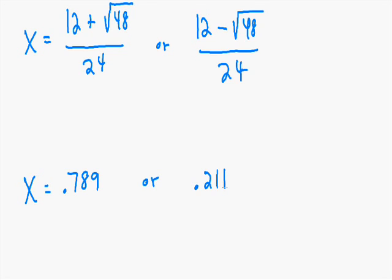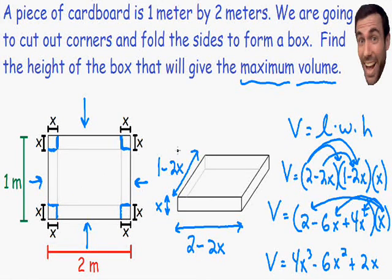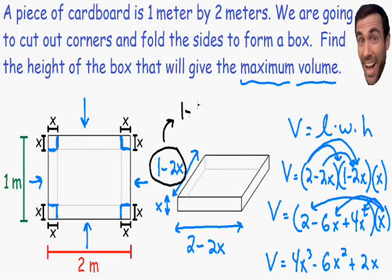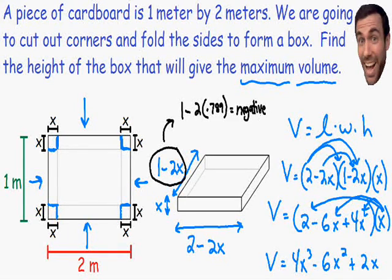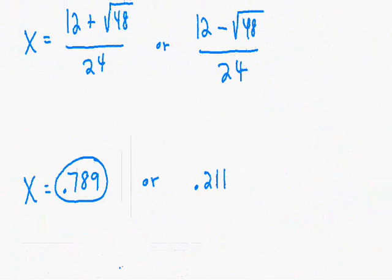Looking at the critical value of 0.789: substituting into the width expression 1 − 2x gives 1 − 2(0.789), which is a negative value. Since a distance can never be negative — it must always be greater than zero — this critical value is not physically possible and must be discarded. The only valid critical value is x = 0.211.